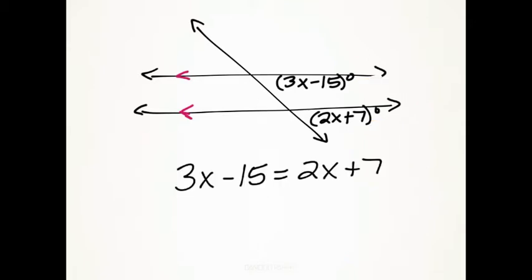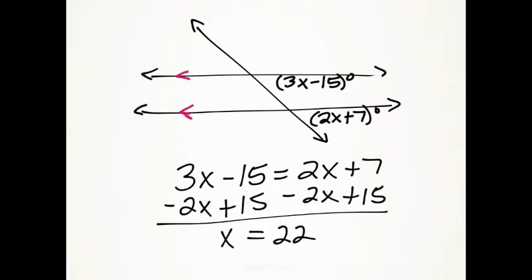So in order to find out what the value for X is, I'm just going to make those two values equal one another. And then cutting the whole process short, subtracting 2X from both sides and then adding 15 to both sides, we find out that X equals 22.